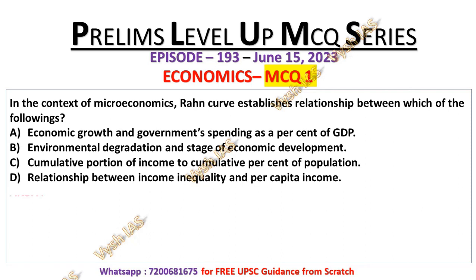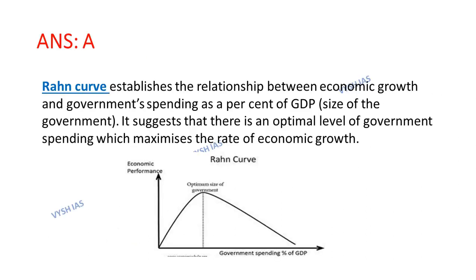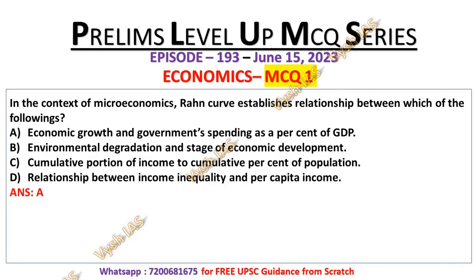The correct answer is option number A, which means Rahn Curve establishes a relationship between economic growth and government spending as a percentage of GDP. You can see on the graph that at the peak it is the optimal level, showing the Rahn Curve. The y-axis represents economic performance and the x-axis represents government spending as a percentage of GDP. Rahn Curve suggests that there is an optimal level of government spending which maximizes the rate of economic growth. That's why option number A is the correct answer.